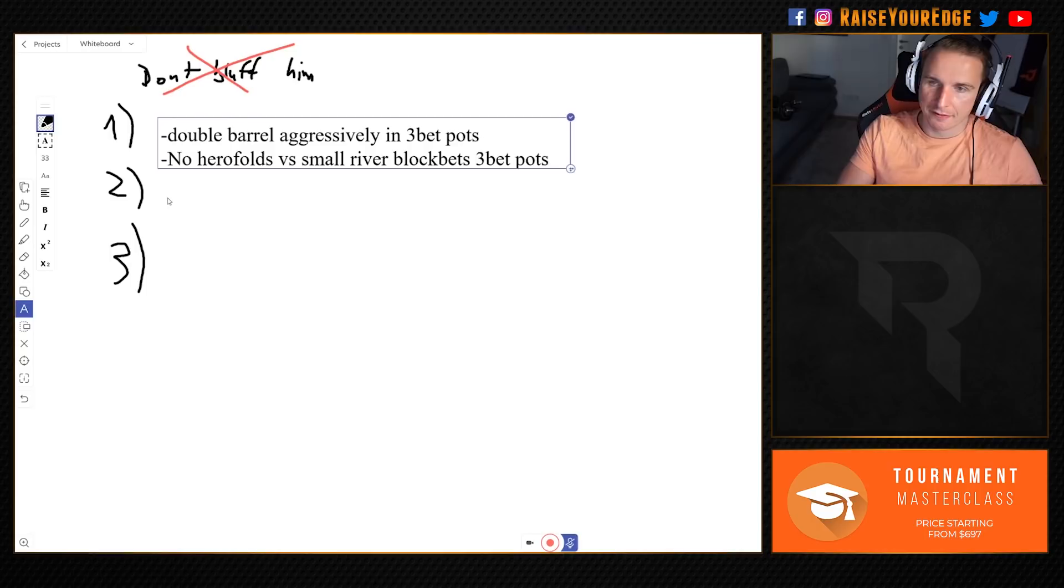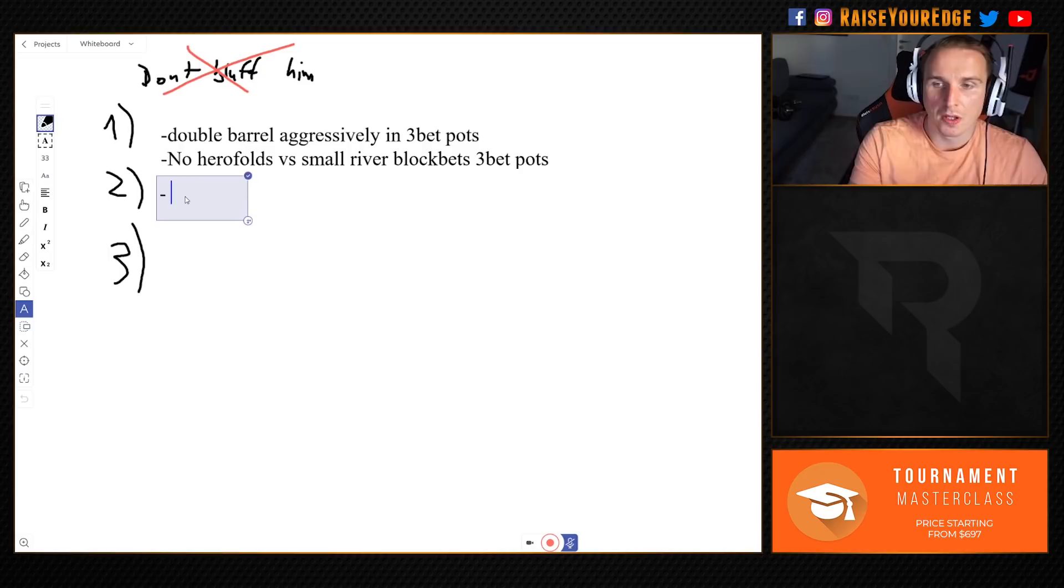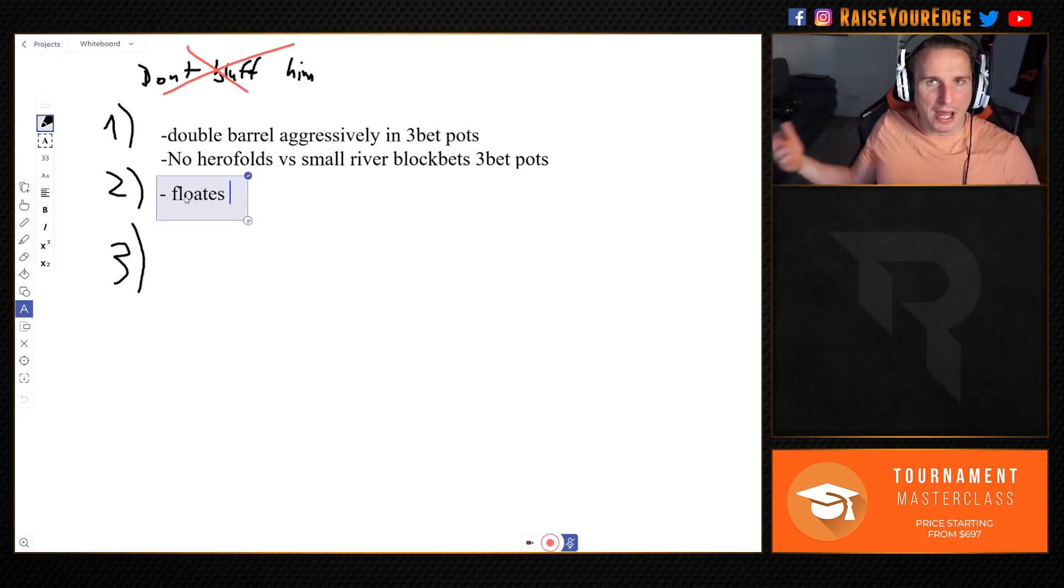No hero folds versus small river block bets, 3-bet pots. It doesn't take you more than three seconds and you know what is going on. This is here for the first section. We have two exploits that we can make. And then for the second section, you elaborate a little bit more because the goal for taking notes is to save yourself time. Because very often we have a lot of tables, we have a lot of action. We only might have five or ten seconds to decide because we have multiple big decisions to make.